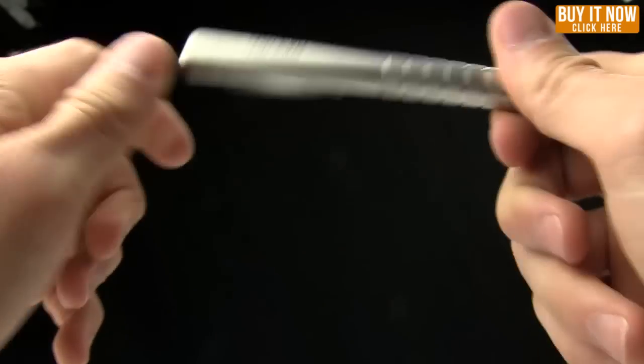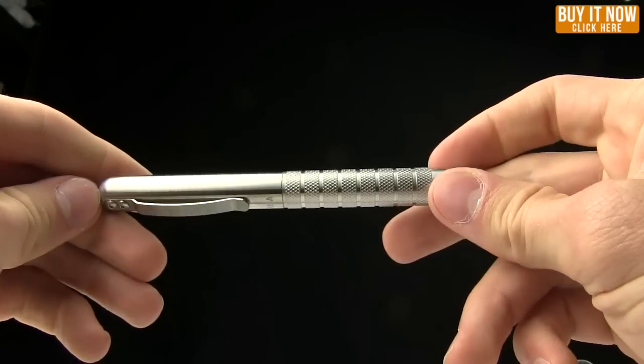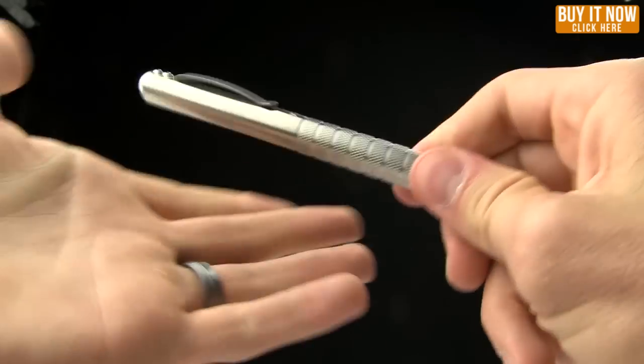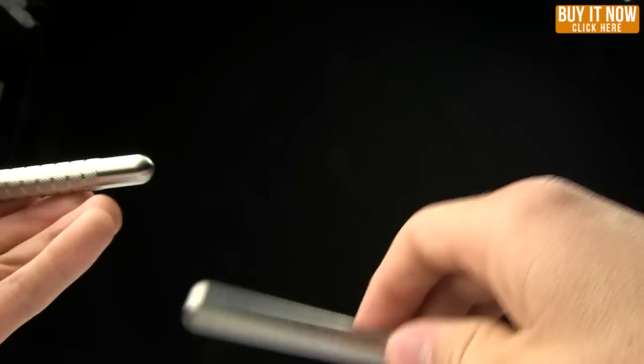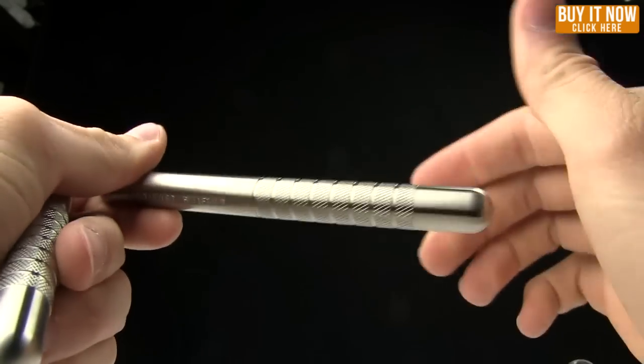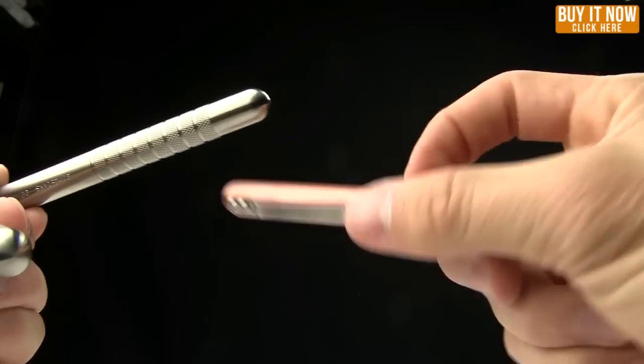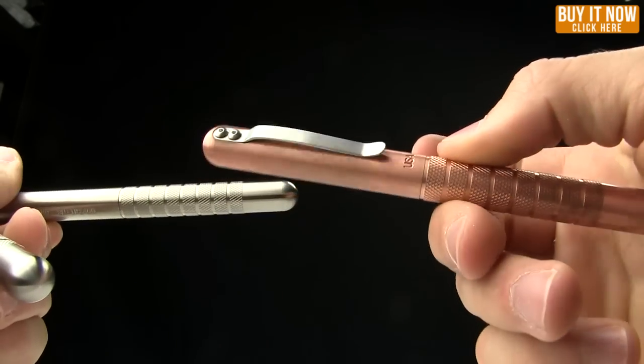And the weight on the stainless steel version is 3.8 ounces. So weight on this one, 3.8 titanium, super light, 2.2. And then this copper is just a beast, 4.4 ounces on that one.